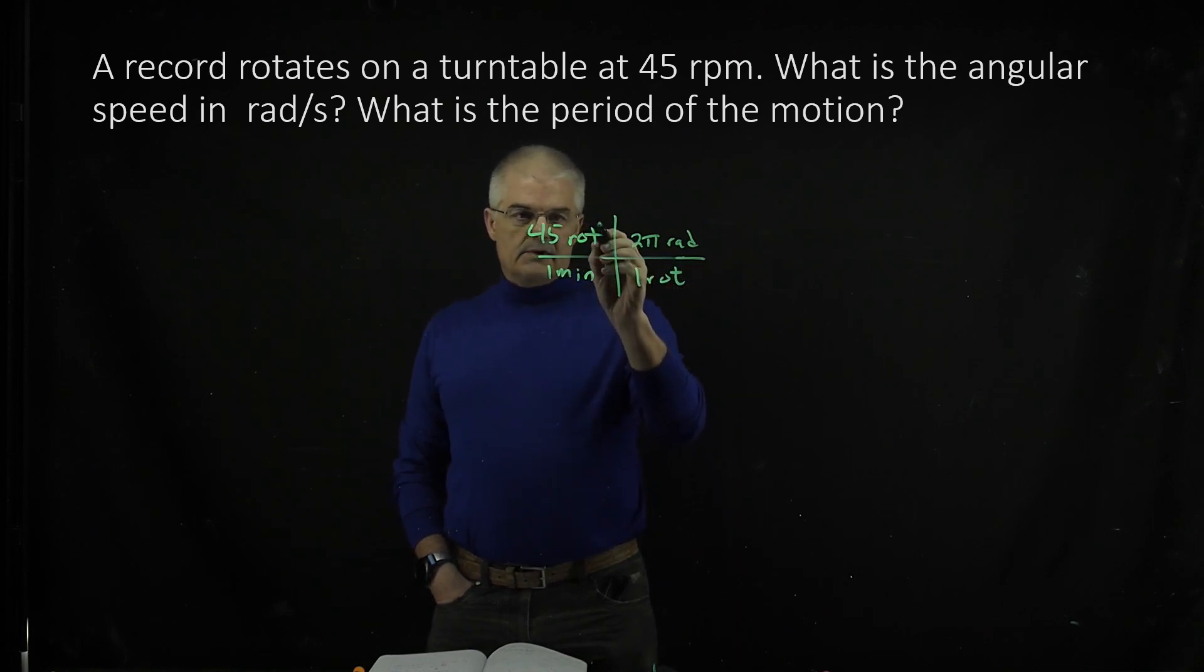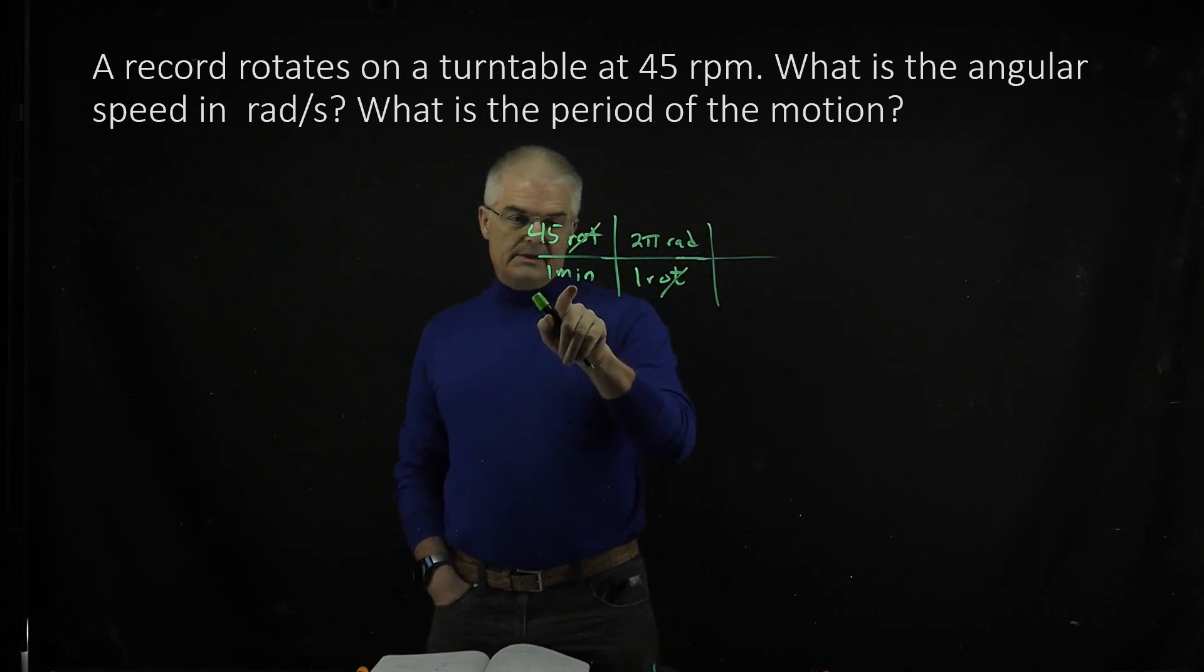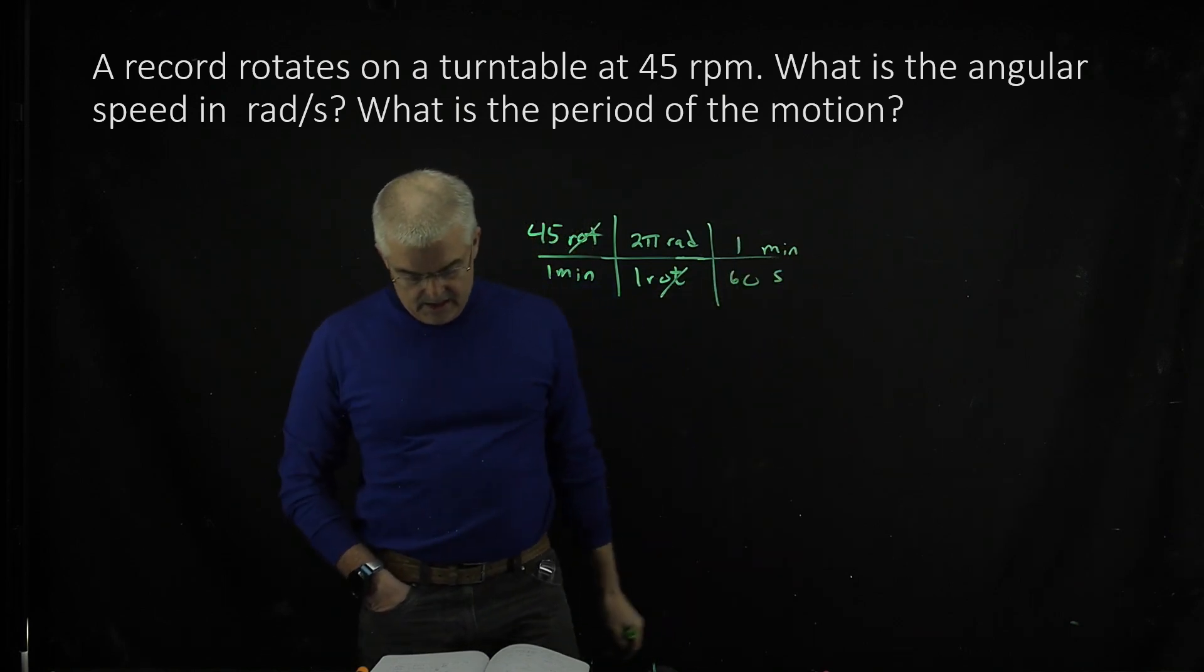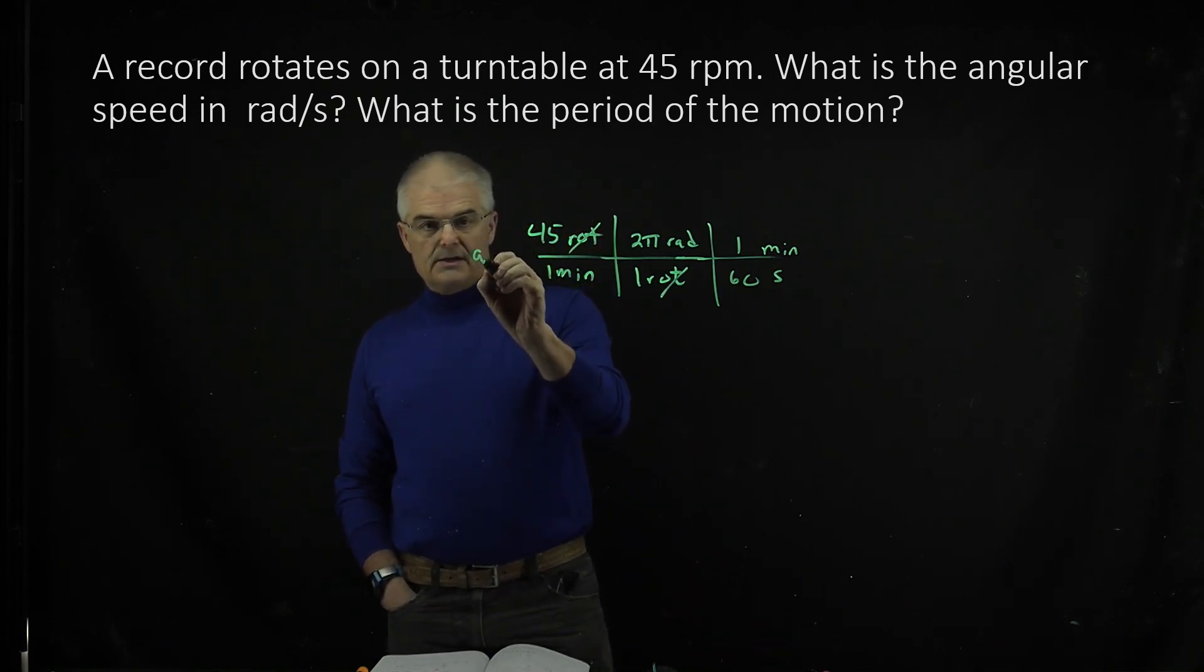And then my rotations cancel. And if I want to get the angular speed in rads per second, I do have minutes here. So I want to cancel off the minutes. I put minutes here, seconds here. One minute is 60 seconds. And then you do the math right there. So that's the answer to part A.